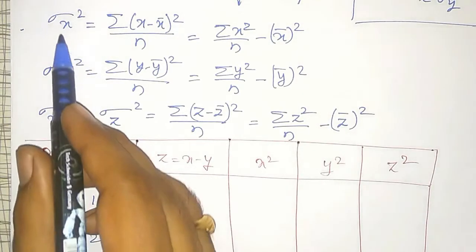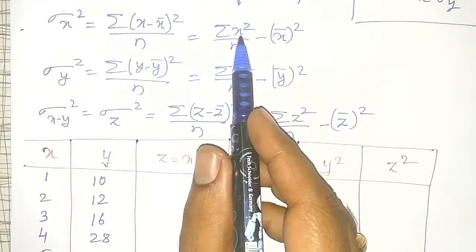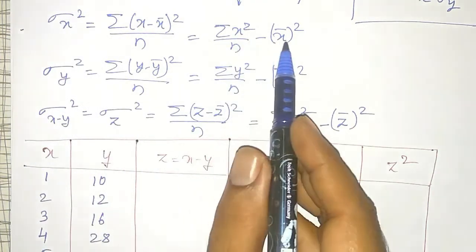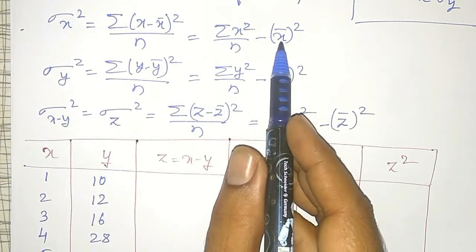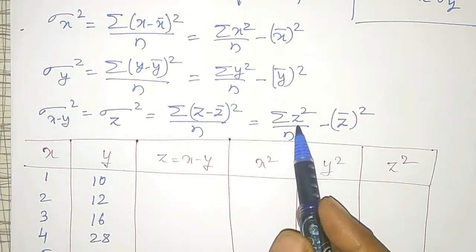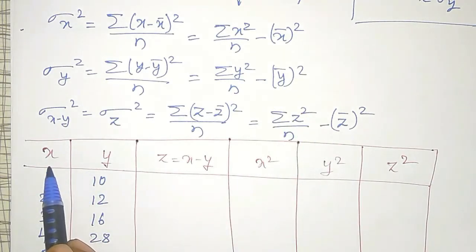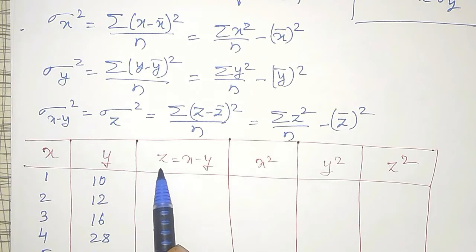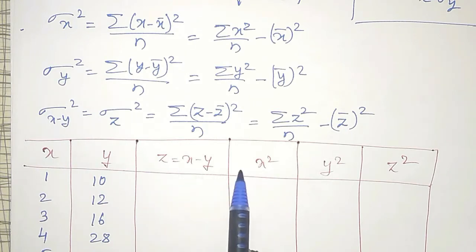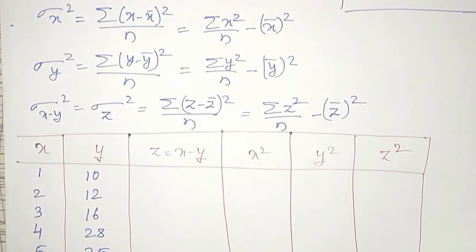According to my requirements I need: summation of x², summation of y², summation of z². So I have prepared a table with columns x, y, z (where z = x − y), x², y², and z².